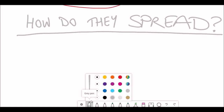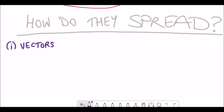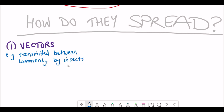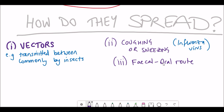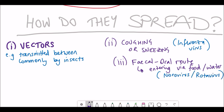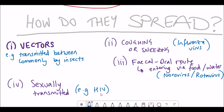So one of the main questions regarding viruses is, how do they spread? There's a variety of different mechanisms that viruses can employ, one of which is via factors such as transmission between plants, which can be done via insects. There's the typical coughing and sneezing, such as with the influenza virus. There's also faecal-oral routes, which could come through transmission by entering the food and water system — classic examples being norovirus and rotavirus. And lastly, there's also sexually transmitted forms of viruses, such as HIV.